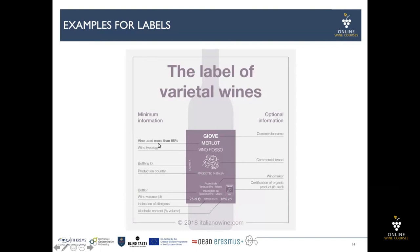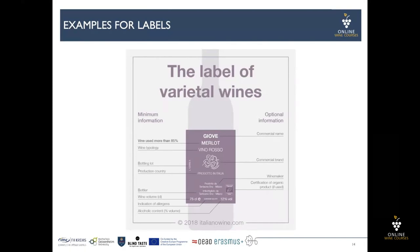Remember, varietal wine uses more than 85% of one wine typology — vino rosso or vino bianco, for example white wine or red wine. The label must include: bottling lot, production country, bottler, wine volume, indication of allergens, and alcoholic contents. Optional information includes: commercial name, commercial brand, winemaker, and certification of organic product if used.